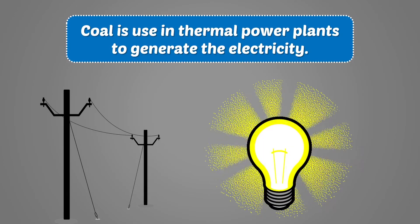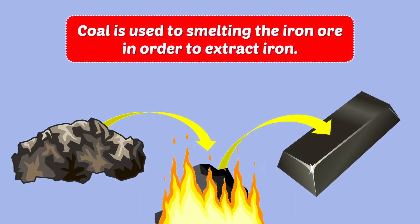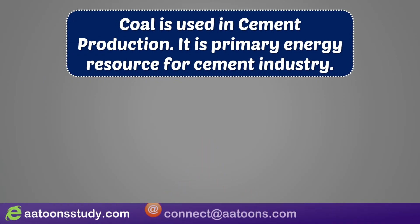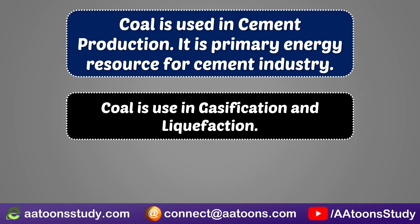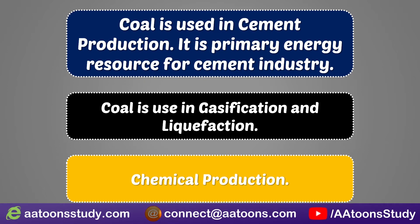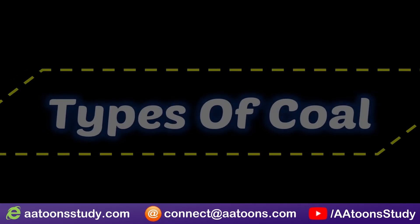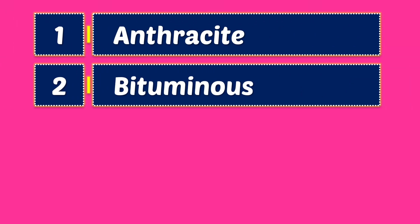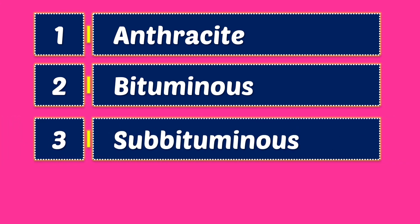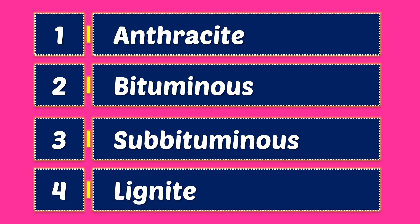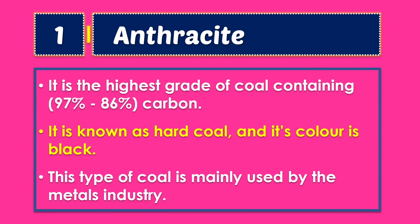The high temperatures and pressure transformed the peat into coal. Uses of coal: coal is used in thermal power plants to generate electricity. Coal is used to smelt iron ore in order to extract iron. Coal is used in cement production as a primary energy resource. Coal is also used in gasification and liquefaction.